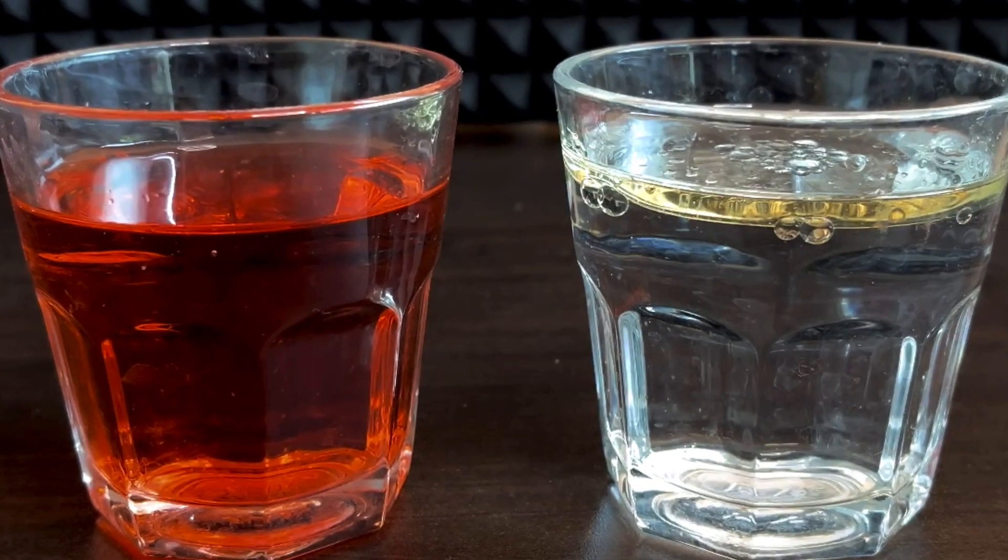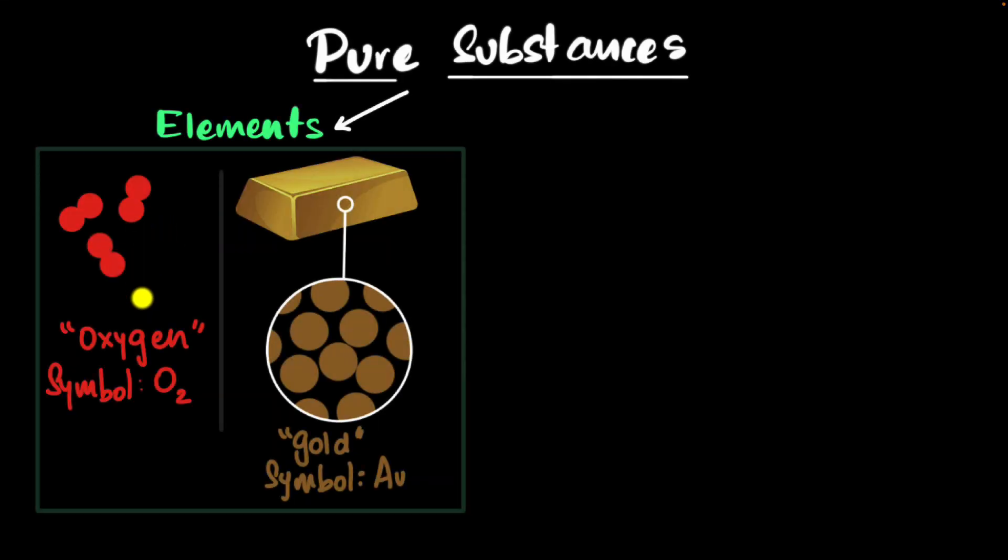And this difference is important in chemistry. So let's talk about them. Before we talk about mixtures, let's quickly recap pure substances. Pure substances can either be elements, which are basically made of one kind of atoms. These are the elements that you find in the periodic table. For example, oxygen is made of all oxygen atoms. You have gold, which is all made of gold atoms.